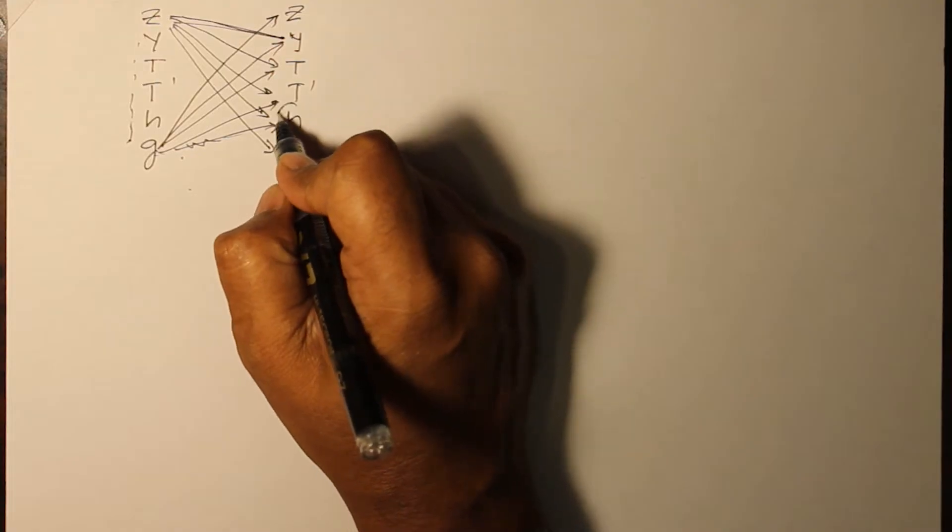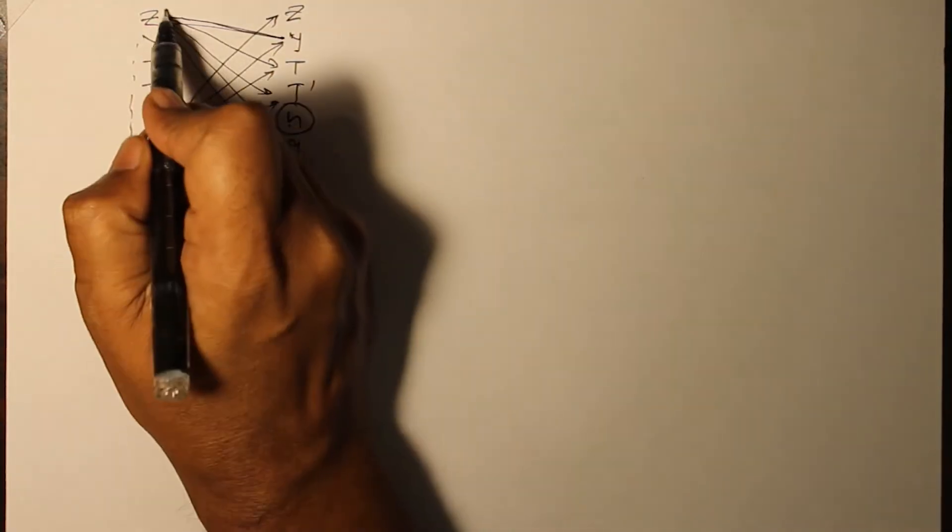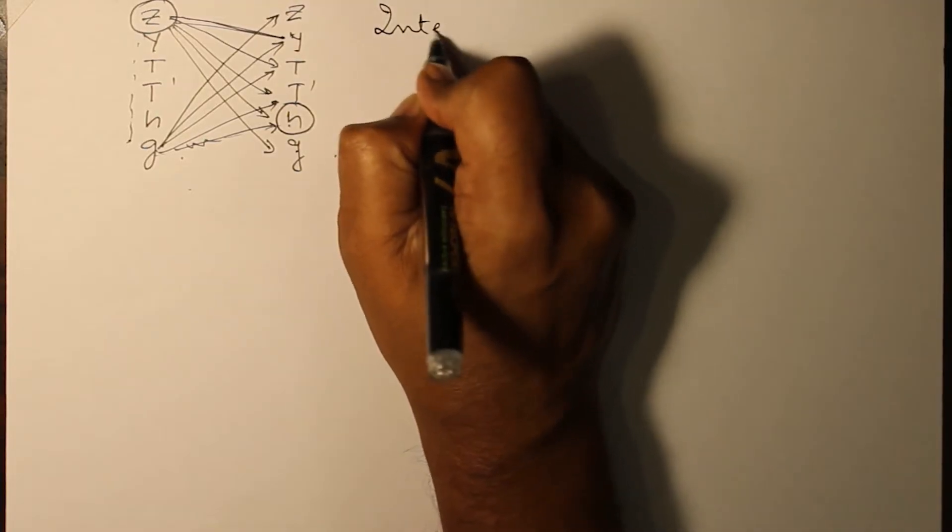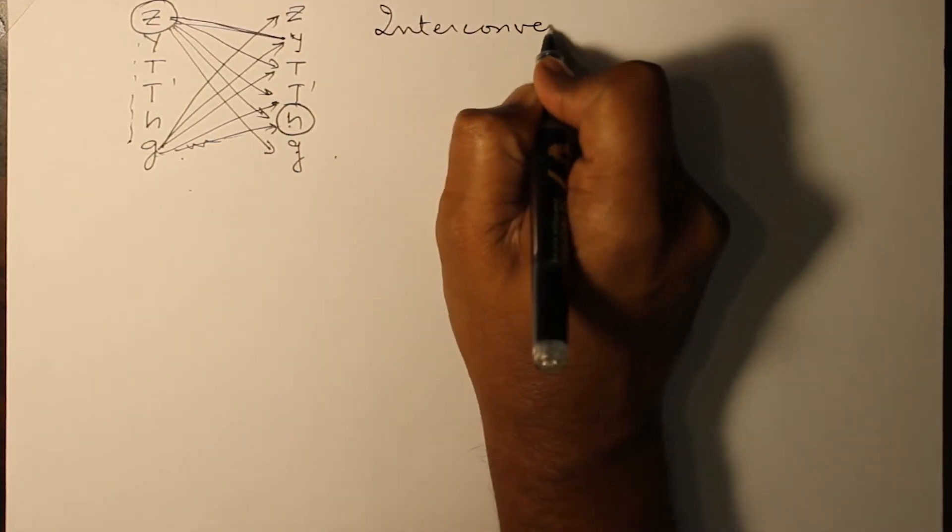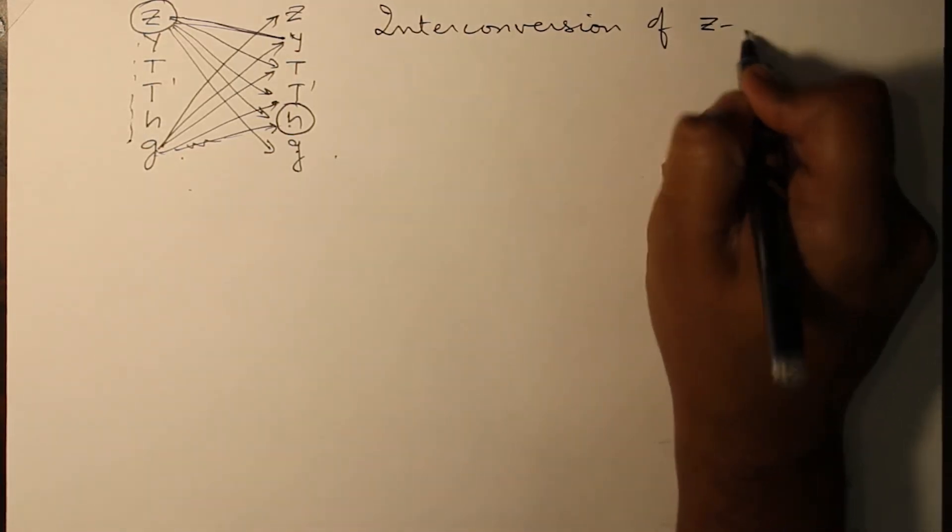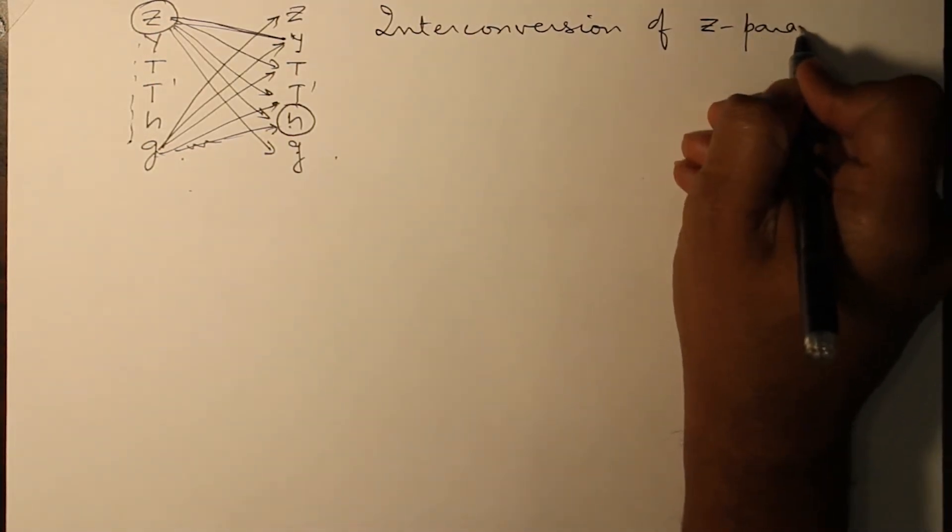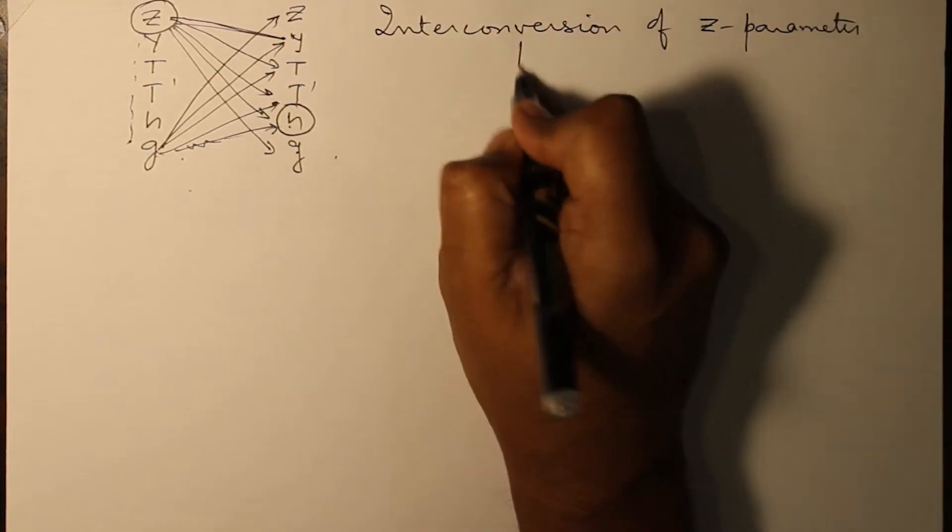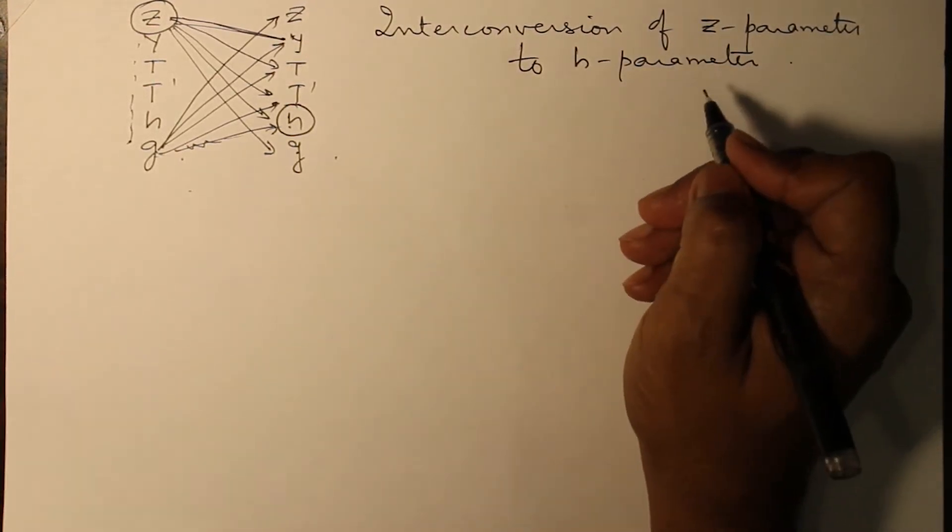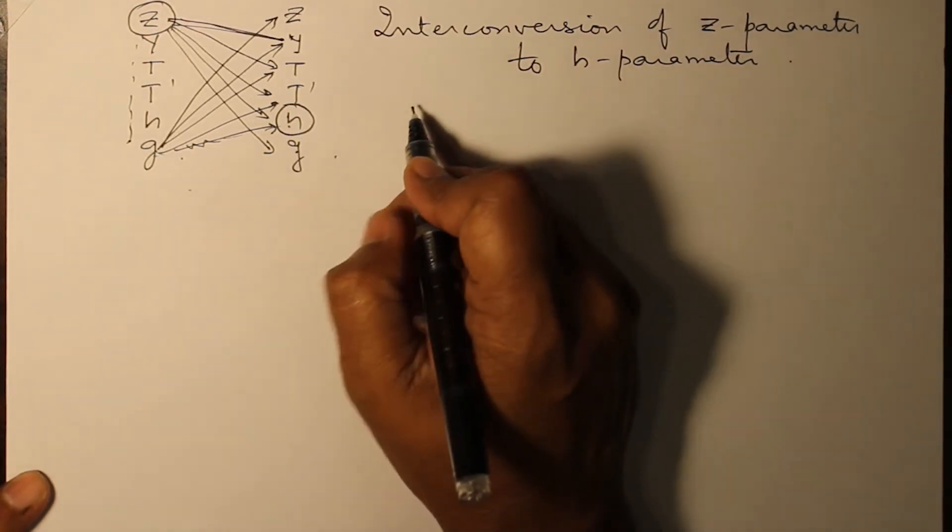Let's take any example. For example, we want to find out H parameter and Z parameter is given. So interconversion of Z parameter to H parameter.